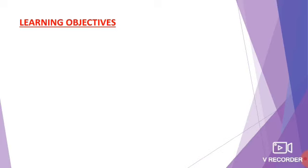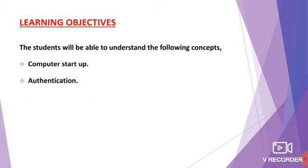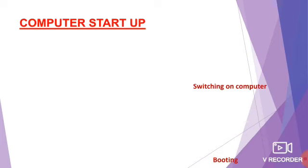So today we are going to learn computer startup, authentication, and computer shutdown. So far we learnt how to work in a computer. But we don't know how to start the computer and how to shut down. While your teacher is using the computer in the lab, you can see that certain things she will do before starting the class — then only the computer will work and you can see it on the projector. So to start up your computer, we have to follow some steps. Okay, let me go through them one by one.